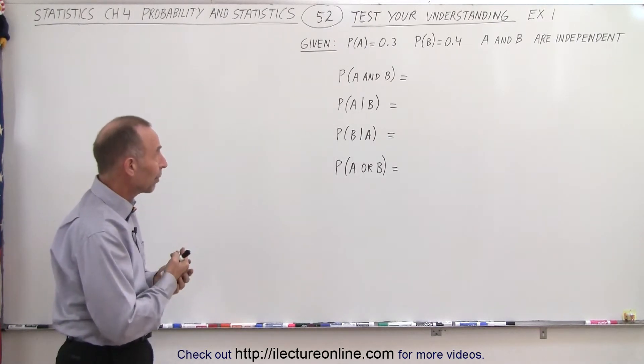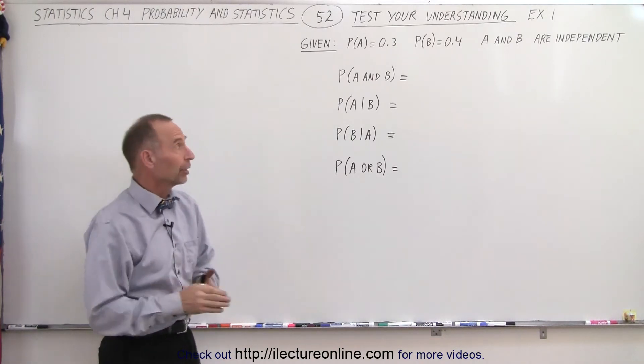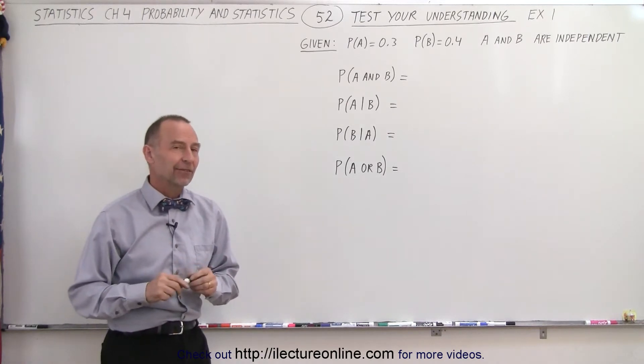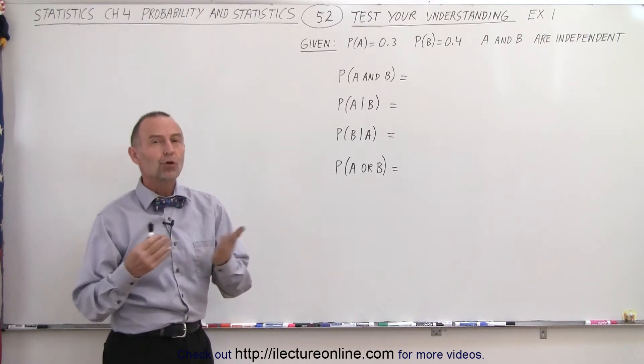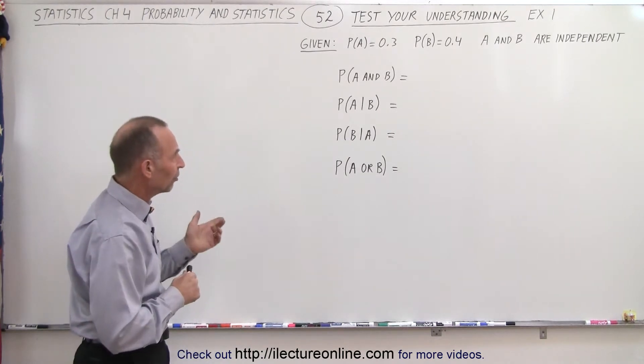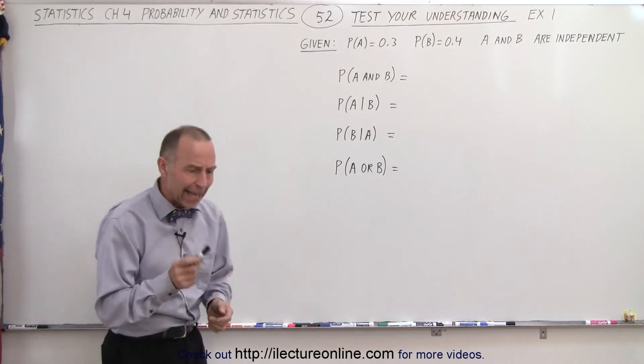We're given that the probability of event A occurring is 0.3, the probability of event B occurring is 0.4, and A and B are independent events. They do not tell us if they're mutually exclusive or not mutually exclusive. They want us to find P(A and B).